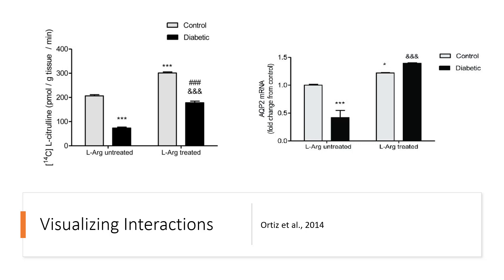Looking at charts from a study published in PLOS One by Maria Ortiz and colleagues in 2014, the graph on the left shows levels of the dependent variable for the control group and the diabetic group when they receive a treatment or don't. In the graph on the right, the bars are not parallel — the control group was higher when untreated, but the diabetic group was higher when treated. This is what we'd expect to see with a significant interaction.